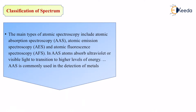The main types of atomic spectroscopy include atomic absorption spectroscopy, known as AAS, and atomic emission spectroscopy, known as AES. Remember, when it comes to light, it can either be absorbed or emitted. When light is absorbed, that spectroscopy is known as AAS; when light is emitted, it is known as AES. Finally, atomic fluorescence spectroscopy, known as AFS, arises from the phenomenon of light being fluorescent in nature.